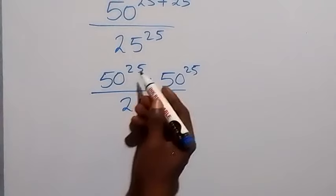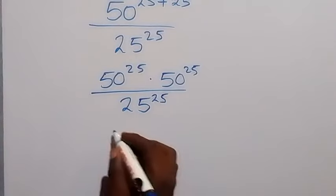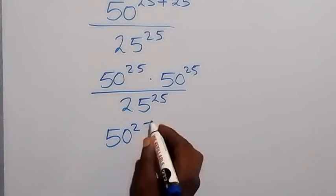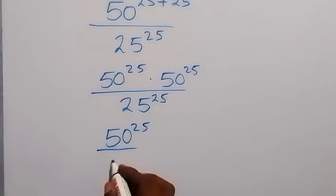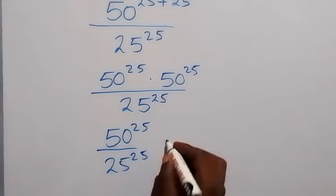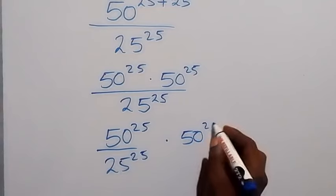And from here, we can separate 50 raised to power 25 and 25 raised to power 25 together so that we have 50 raised to power 25 divided by 25 raised to power 25, then times 50 raised to power 25.